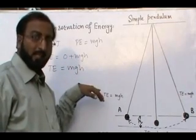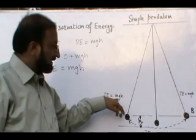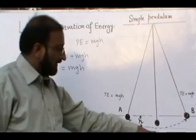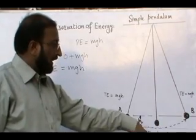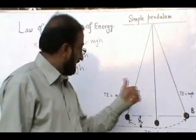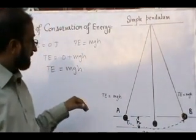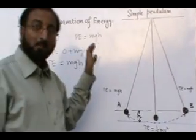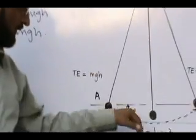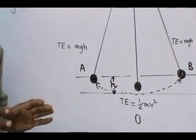we arrive at the result that at point A, total energy is mgh. At point O, total energy is half mv squared. While at point B, total energy is mgh, which is the same as at point A. So from this discussion, we can say that energy can neither be created nor destroyed; it may change from one form to another form, but the total amount of energy of an isolated system remains constant.